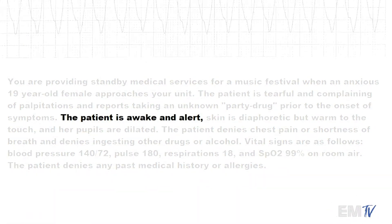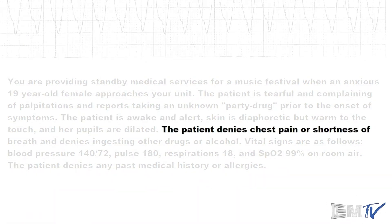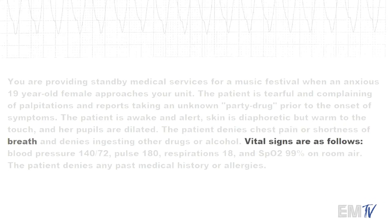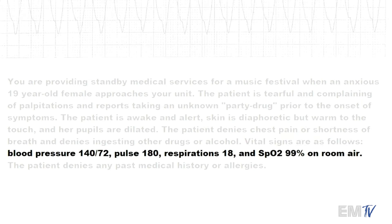The patient is awake and alert. The patient denies chest pain or shortness of breath. Vital signs are as follows: blood pressure is 140 over 72, pulse of 180, respiration is 18, and the SpO2 is 99% on room air.